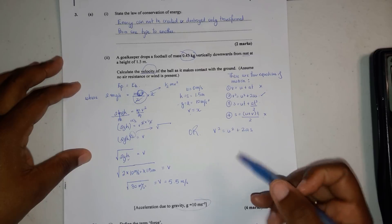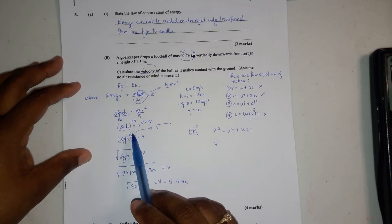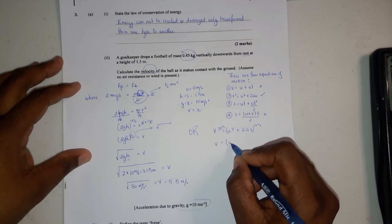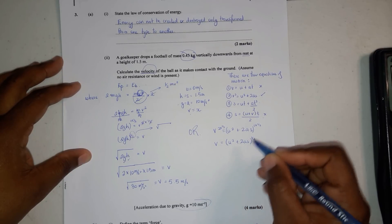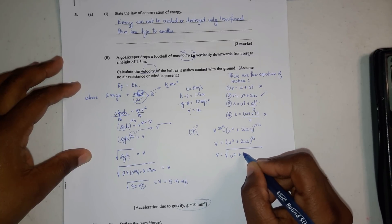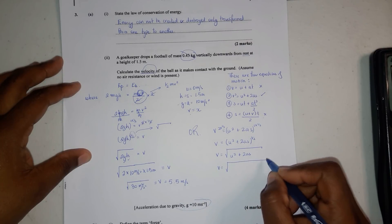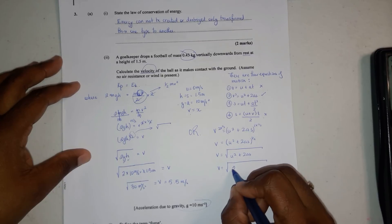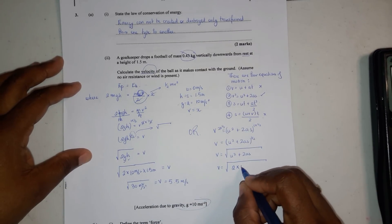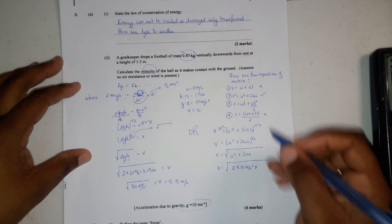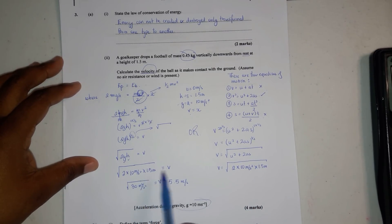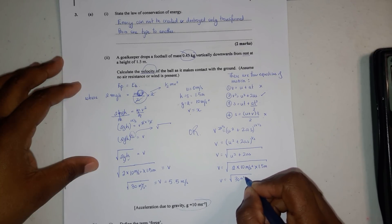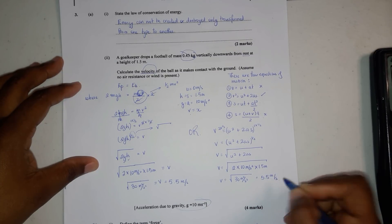We do the same thing we did before. Multiply by a half here and multiply this whole thing by a half. You're left with u squared plus 2as raised to a half. So v equals the square root of u squared plus 2as. What is u? Zero. Zero times zero gives you zero. So we're left with 2as. 2 times 10 meters per second squared times 1.5 meters. Of course, we get v equals square root of 30 meters squared over second squared equals 5.5 meters per second.